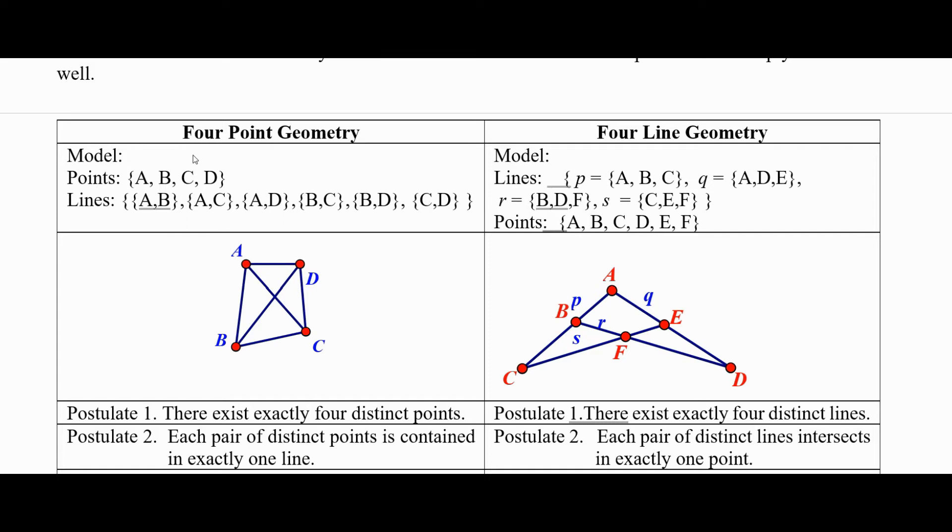So we recall our model of our four-point geometry from the last video is we have points A, B, C, and D. And we have lines of two points AB, AC, AD, BC, BD, and CD like this.